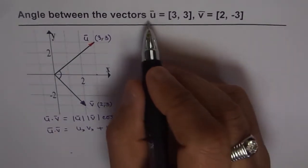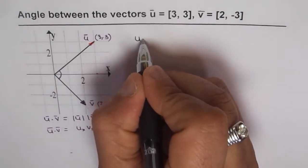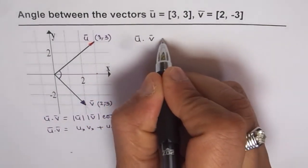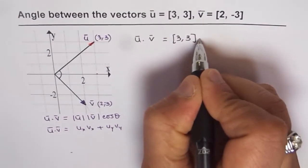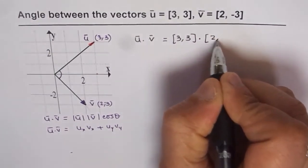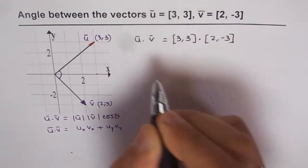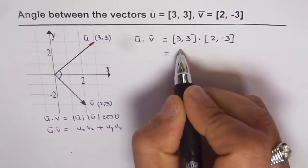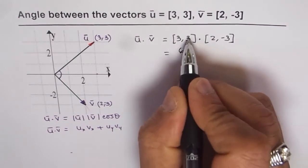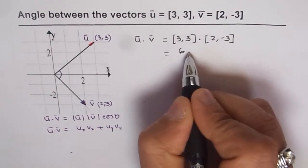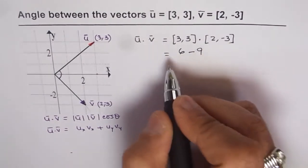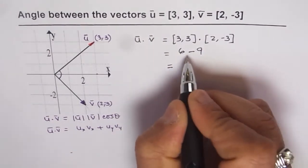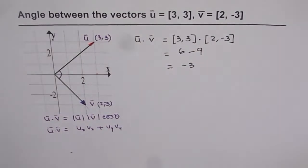So first let's find the dot product of u and v algebraically. u dot v equals (3, 3) dot (2, -3). That gives us 3 times 2, which is 6, and 3 times -3, which is -9. So u dot v equals 6 minus 9, which is -3.